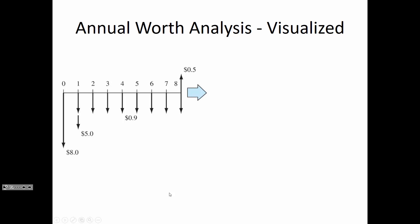At the terminal year — year eight — you get the 0.9 million expense for having operated it during the previous year, and then there's a salvage value of 0.5 million at the end. What we're going to do today in class is convert a cash flow diagram like this into one that only has annual amounts, with no amount in year zero — there's no present value in annual worth analysis.